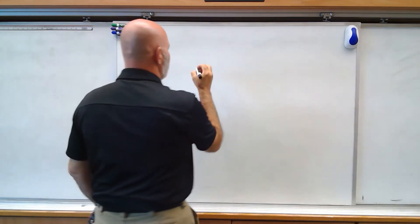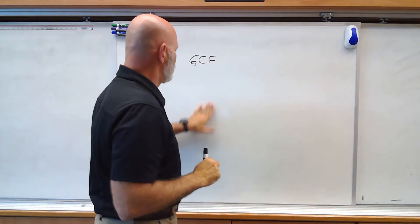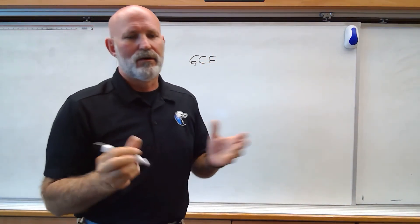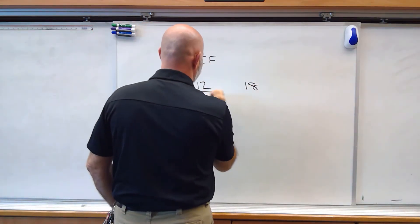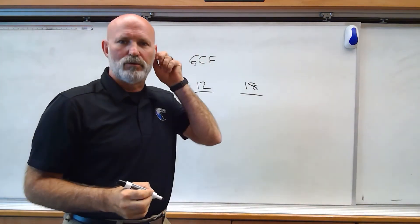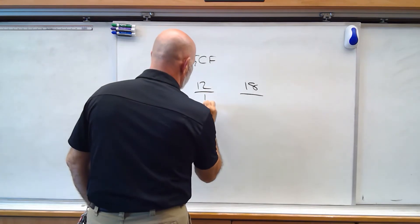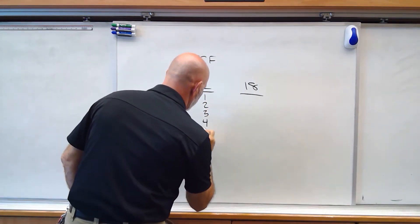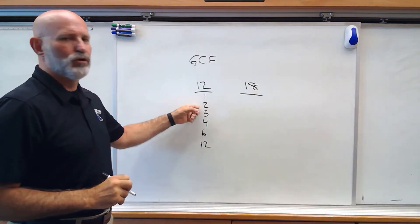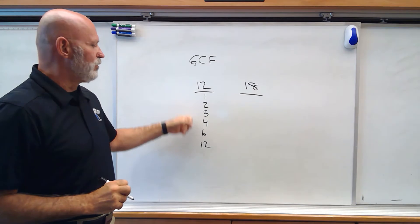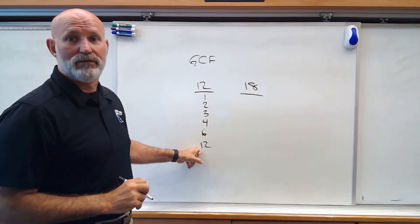So let's say we've got greatest common factor, and let's say we want to factor 12 and 18. I'm going to look at all the numbers that will go into both of these evenly. So we've got 1, 2, 3, 4, 6, and 12 — these are all the numbers that will go into 12 evenly. Now you notice, once we hit the halfway point, which in this case is 6, the next number is obviously going to be 12.